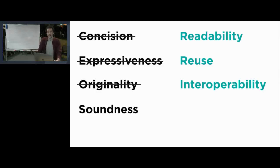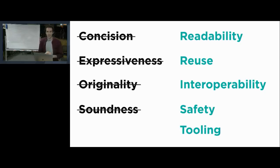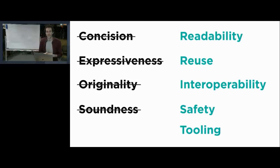Last but not least, there is soundness. Soundness is a very important property of a language from a mathematical standpoint, but what we care about in Kotlin is safety and tooling. Being sound is just a way of implementing this. What we care about is catching your bugs as early as possible in a convenient way, without cluttering your code or having you struggle with a compiler. We want tools to understand your programs as well as they can — to help you refactor reliably, find usages, navigate code, and so on.